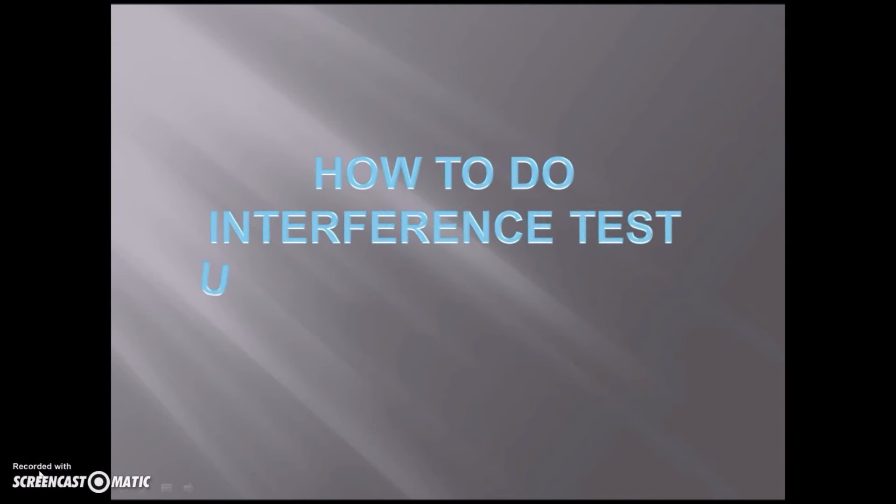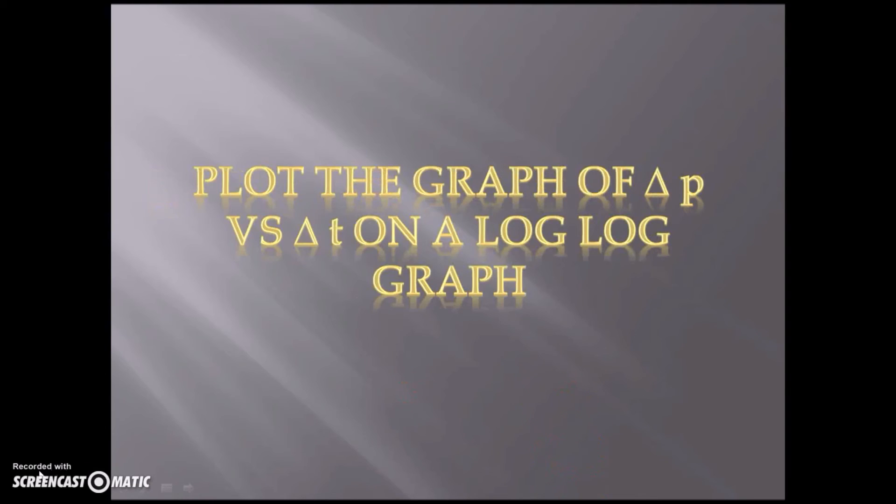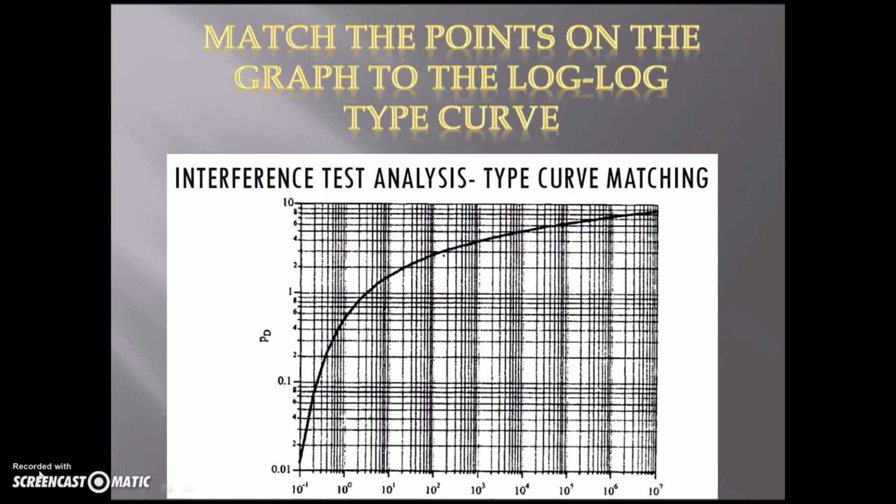For the first step, what we need to do is we need to construct the table of delta T time and delta P pressure. Sets of data will be provided for delta T. And we need to calculate delta P using this formula, which is delta P equals to initial pressure minus the bottom hole flowing pressure. Next, after all data are complete, we can now plot the graph of delta P versus delta T on the log-log graph. It would be easier if we draw the graph on a tracing paper.